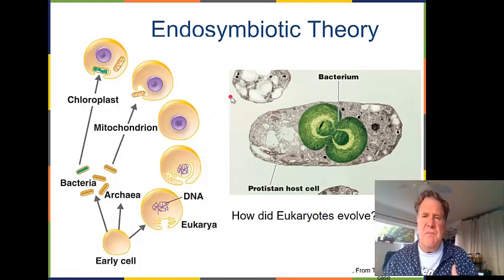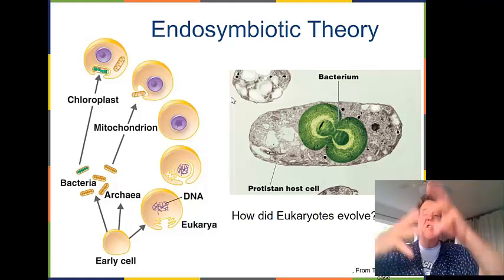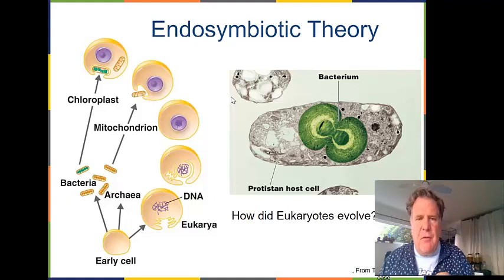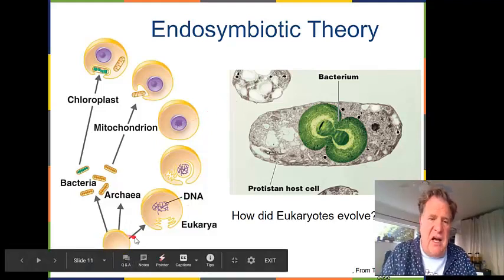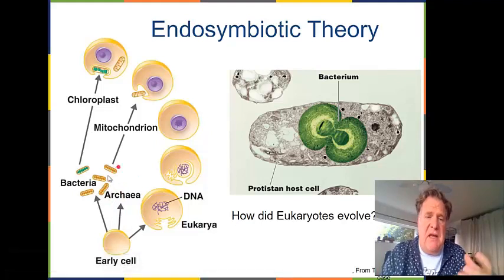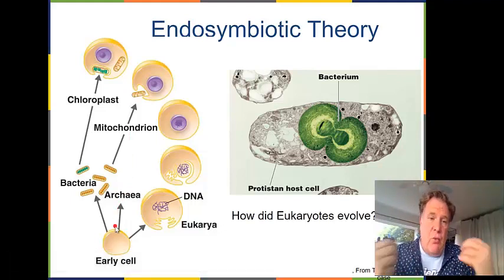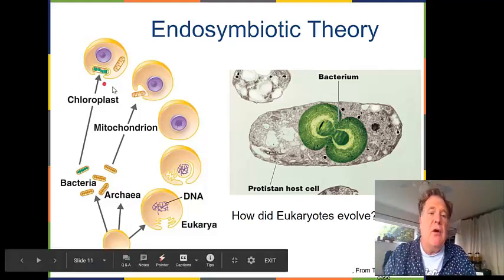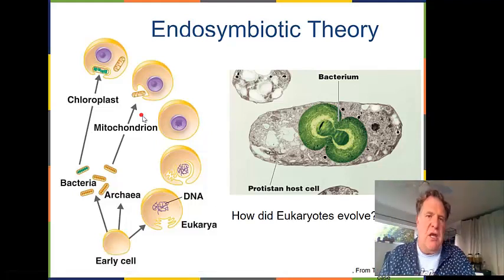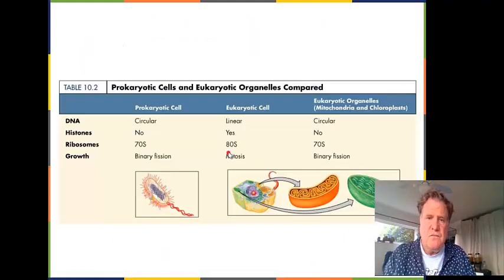We need to talk about the endosymbiotic theory. Eukaryotes were able to expand their capabilities by forming endosymbiotic relationships. We had an early cell — some type of predator — that fed on alpha bacteria. Instead of eating the bacteria, it found that if it captured the bacteria and had it work for it, it could do a lot more. Mitochondria and chloroplasts are remnants of ancient bacteria that were taken over by this particular cell type, and that's what allowed eukaryotic cells to evolve.